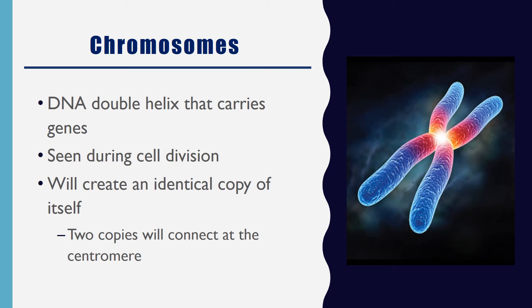Chromosomes are made up of a DNA double helix carrying genes that are coiled up to form the chromosome structure. Chromosomes are really only seen during cell division. Generally, DNA in the nucleus exists as chromatin, and then it organizes into chromosomes for cell division. Chromosomes can create an identical copy of themselves during cell division, and those two copies connect at the centromere.